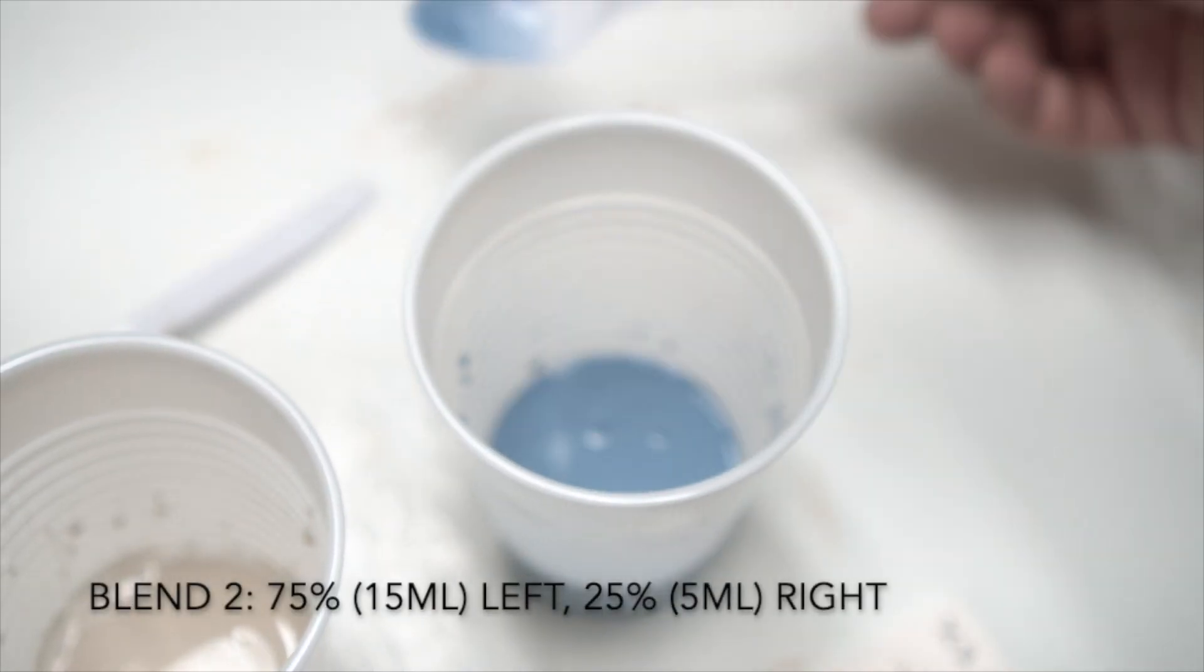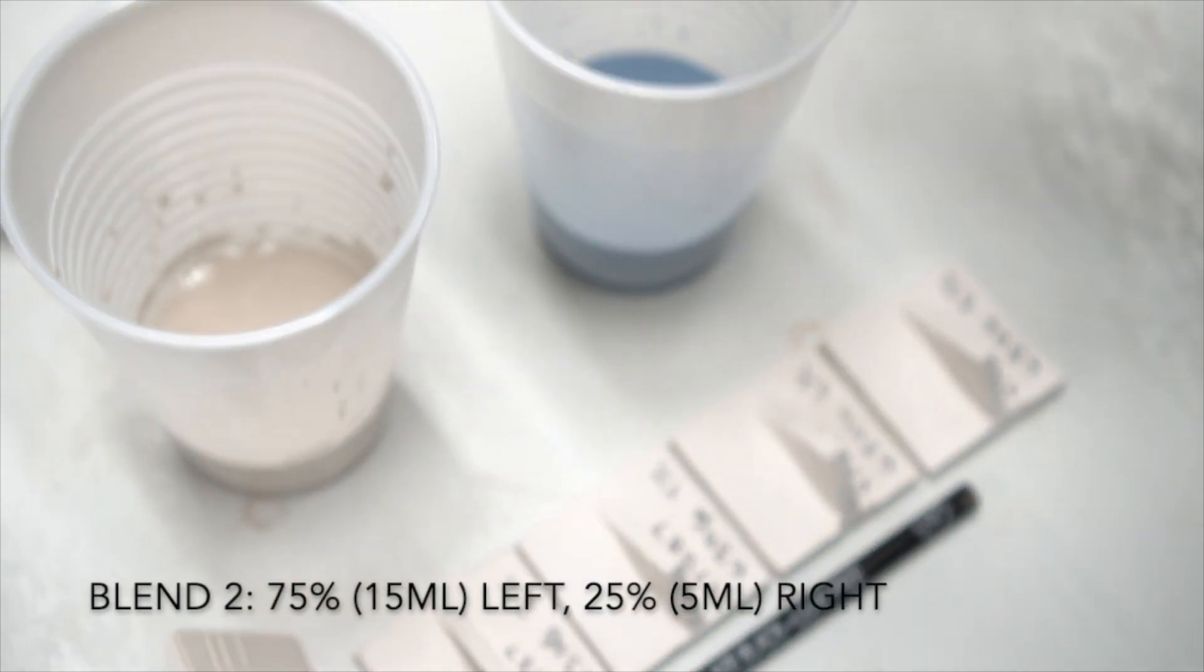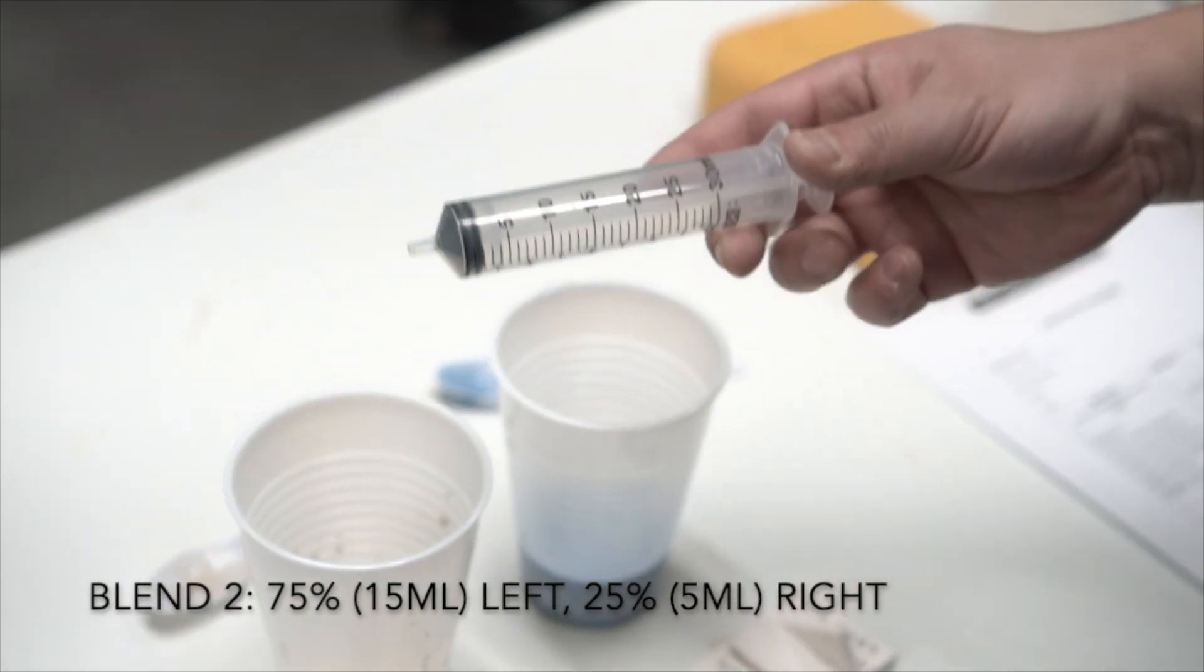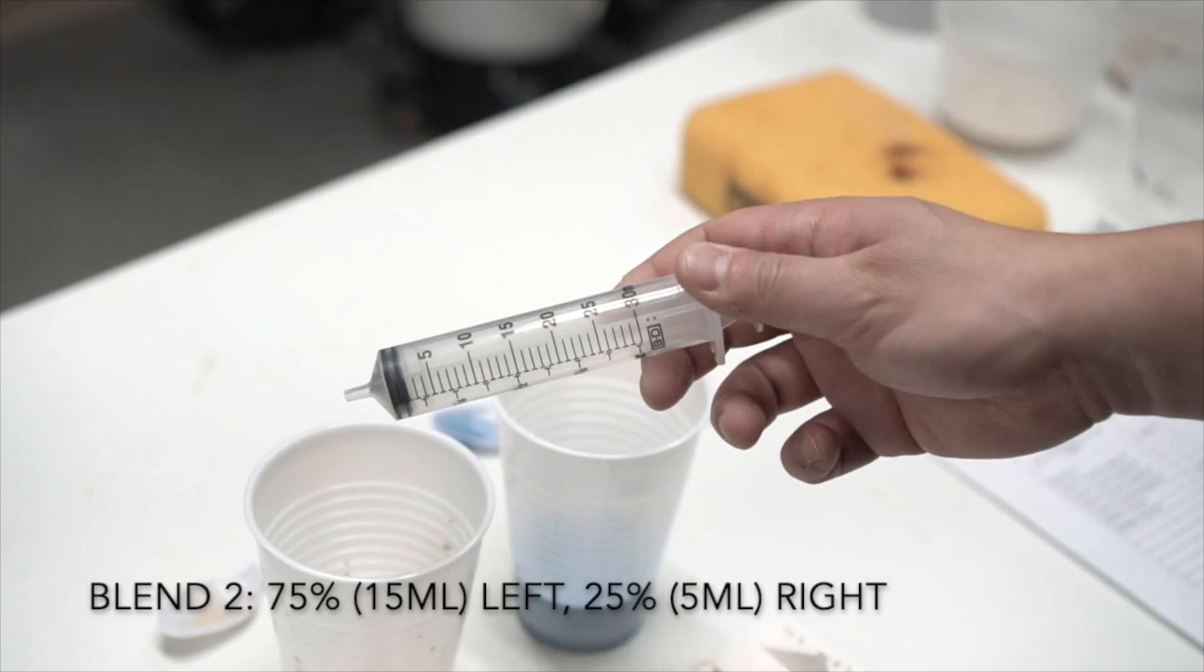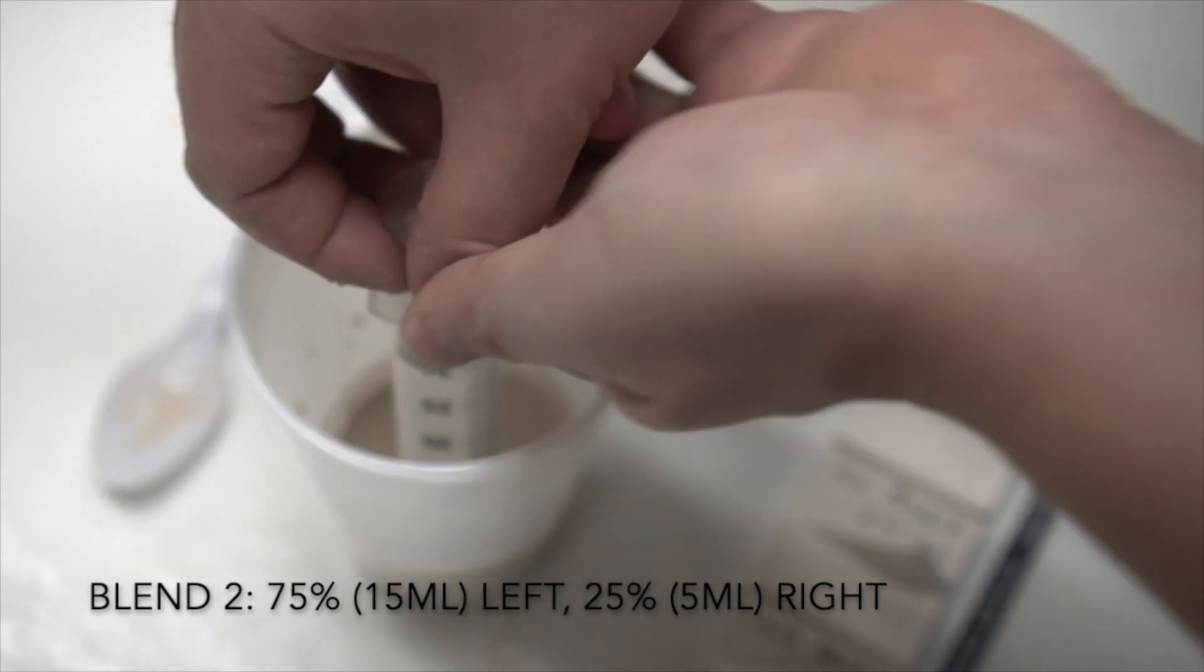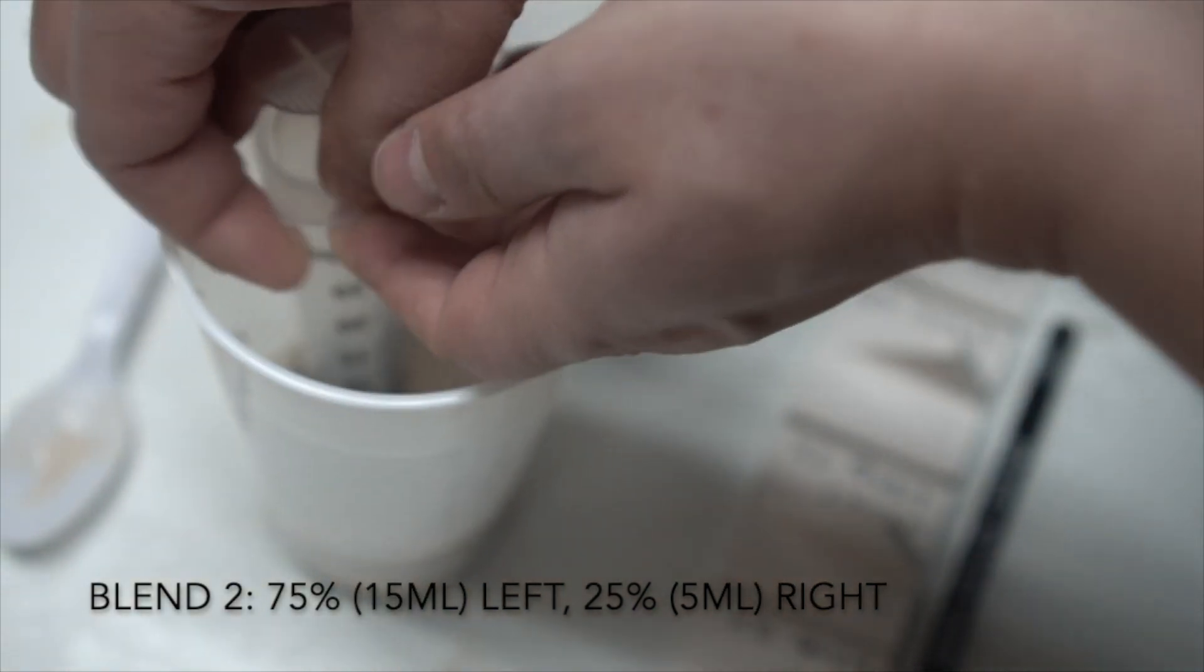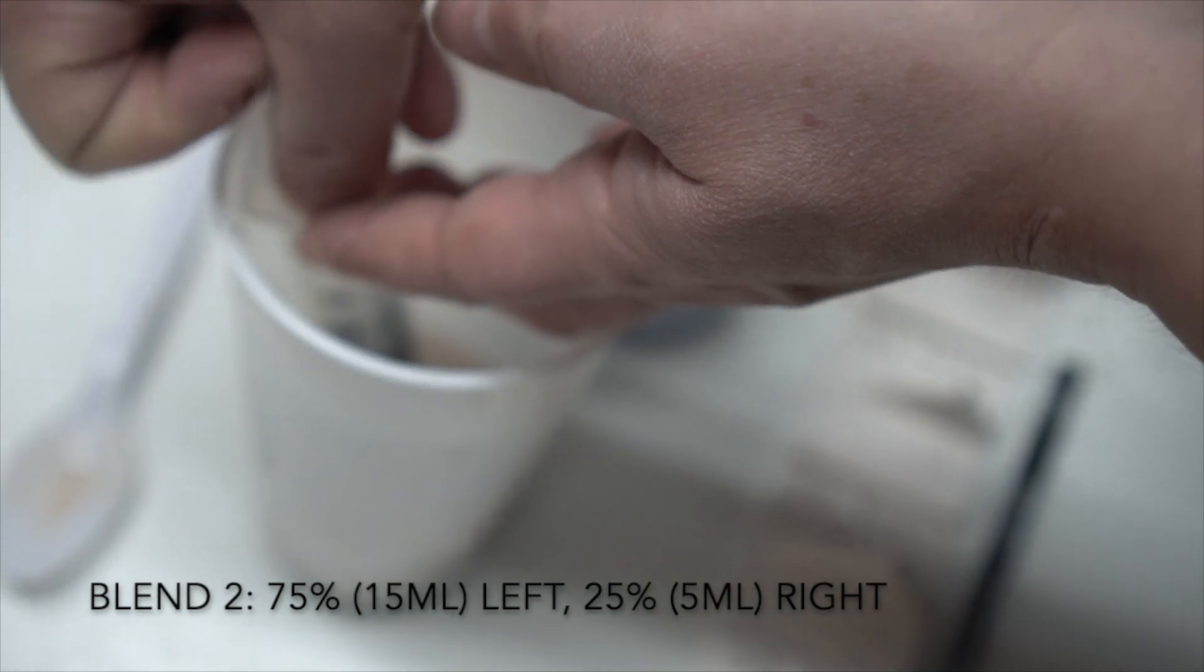Our second glaze is our first blended glaze between the left and the right recipes. Looking at our chart, we're going to need 15 milliliters of the left glaze and 5 milliliters of the right glaze. I first fill the syringe with 15 milliliters of the left clear glaze.